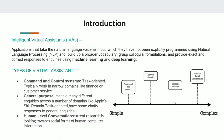Look at the picture from simple to complex. Command and control system is the most basic setup. In this stage, many assistants are task-oriented, typically working in narrow domains like finance or customer service. The general purpose is to handle many different inquiries across a number of domains, like Apple's Siri. They remain task-oriented but have some chatty responses to general inquiries. Current research is also looking towards social forms of human-computer interaction.